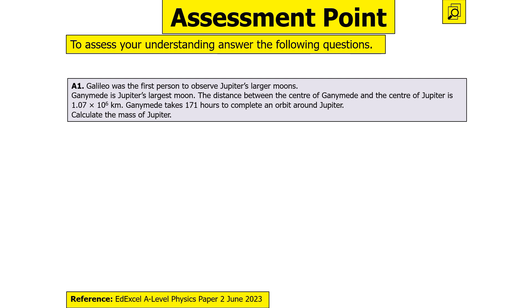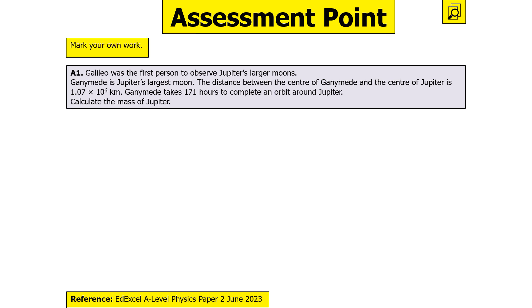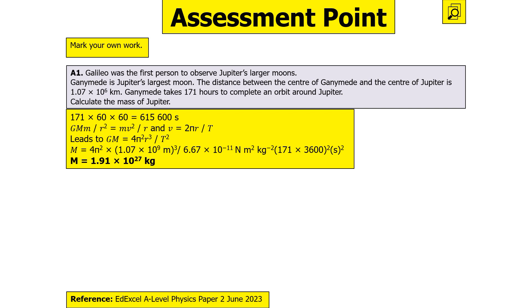Galileo was the first to observe Jupiter's larger moons. Ganymede, Jupiter's largest moon, orbits at a centre-to-centre distance of 1.07 × 10⁶ km and has a period of 171 hours. Calculate Jupiter's mass. Orbital time: 171 × 3600 = 615,600 s. Using GM = 4π²R³/T² (Kepler's law of orbits), rearrange for M and pop in all values to get 1.91 × 10²⁷ kg.